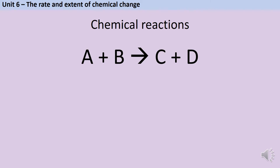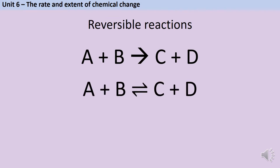Most chemical reactions can be represented by symbol equations such as this one. This equation tells me that the reactants A and B react together to form two products, C and D. But some reactions have a different arrow in the centre, and this symbol shows me that this is a reversible reaction. This means that C and D can react together to turn back into A and B.